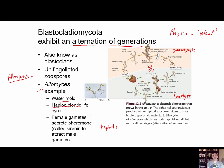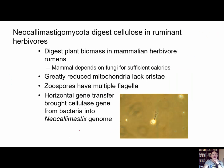The female gamete releases a pheromone called sirenin — named like the mythological sirens on the island calling out to sailors — to attract the male gamete.